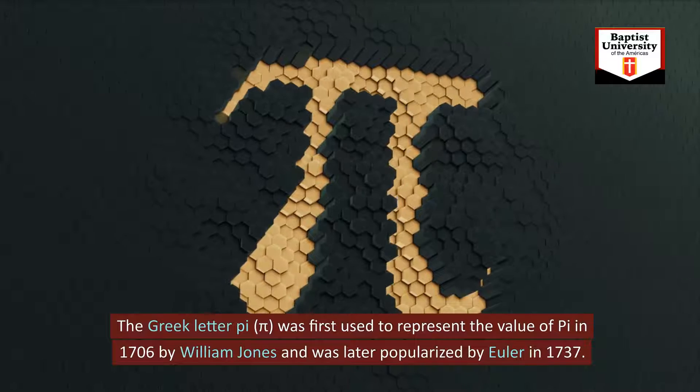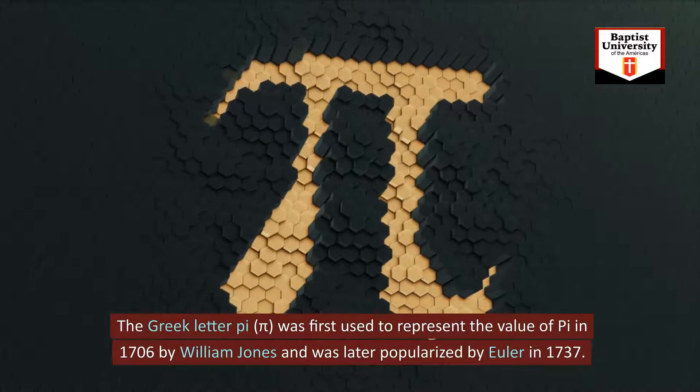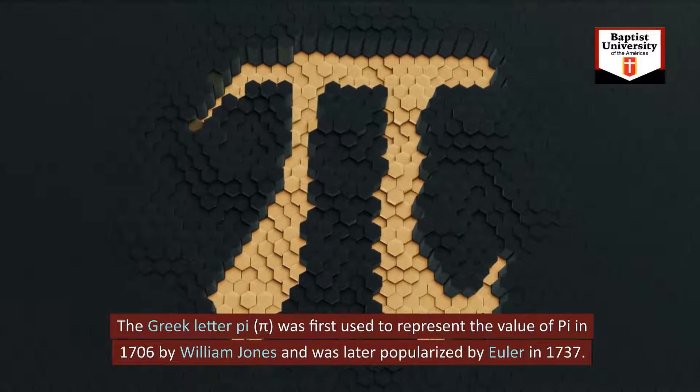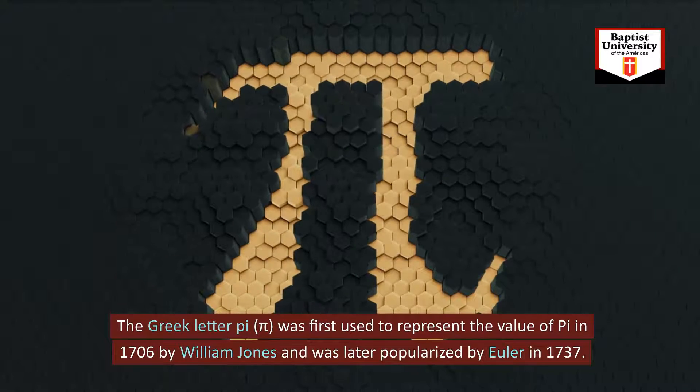The Greek letter pi was first used to represent the value of pi in 1706 by William Jones and was later popularized by Euler in 1737.